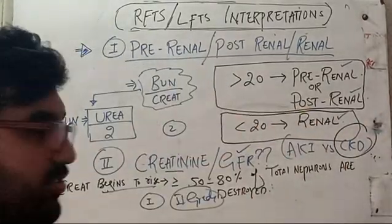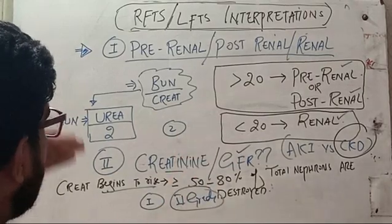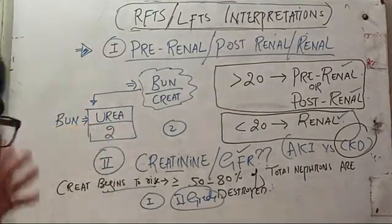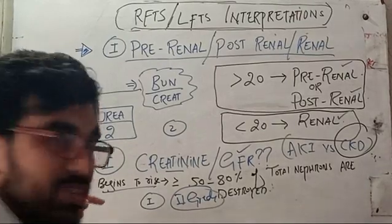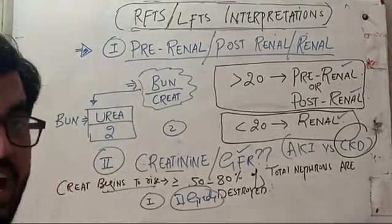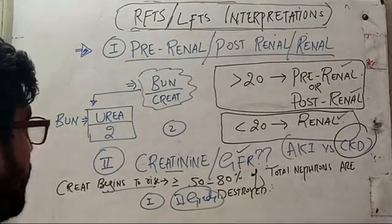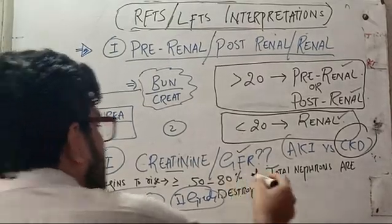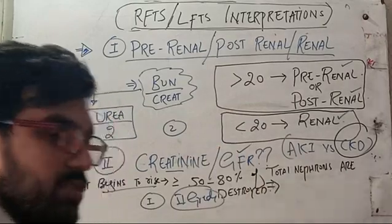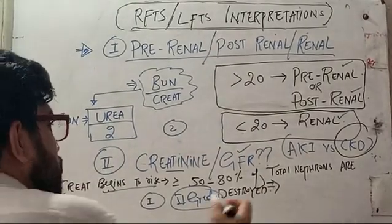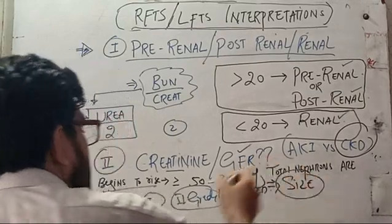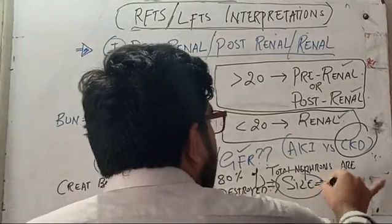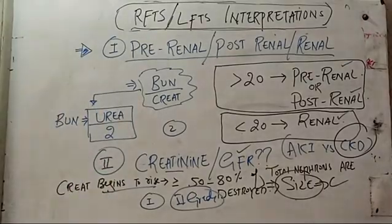Using these three points you can differentiate AKI from CKD. That concludes the discussion on RFTs — how to diagnose pre-renal, post-renal, and renal causes. After calculating GFR and grading the disease, proceed to ultrasound, which can further confirm CKD grading, show kidney echogenicity, kidney size, and corticomedullary differentiation. Loss of corticomedullary differentiation is also a feature of CKD.